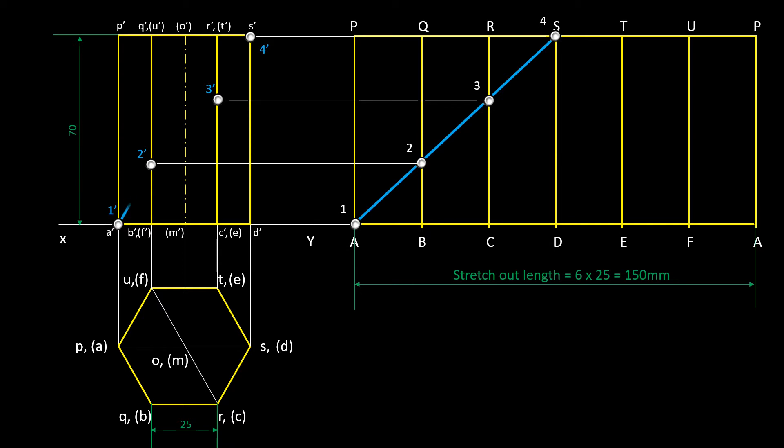Join the points with straight line. The path 1, 2, 3, 4 will be the shortest path. If the length of the shortest path is asked, you can measure the distance from the development.